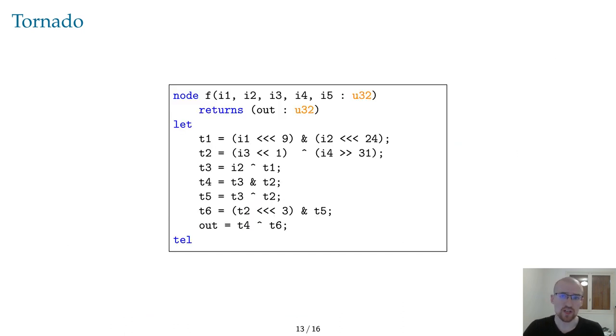Tornado takes as input Usuba code. Usuba is a high-level programming language for cryptography. Here you can see, for instance, the Usuba code corresponding to the example used earlier to explain TightProof+. This code is written as a node F, which takes 5 inputs on 32 bits, and returns a single output on 32 bits as well.